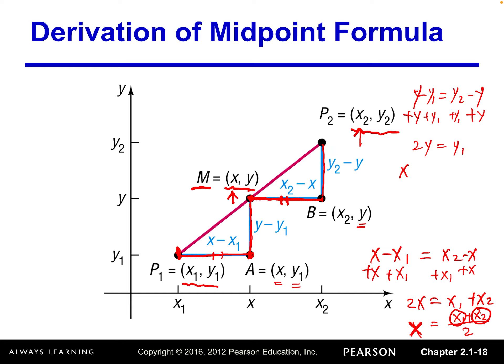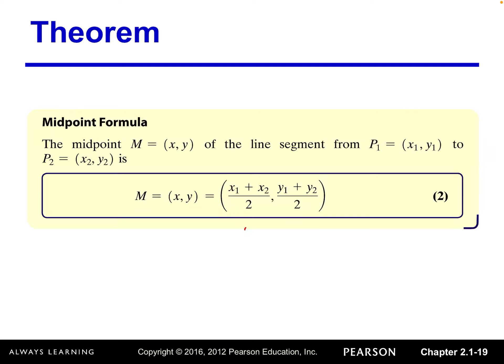So we got 2Y equals Y1 plus Y2. And then solve Y equals one half Y1 plus Y2. So the Y coordinate of the midpoint is also the average of the two endpoints Y coordinates. So that is the midpoint formula.